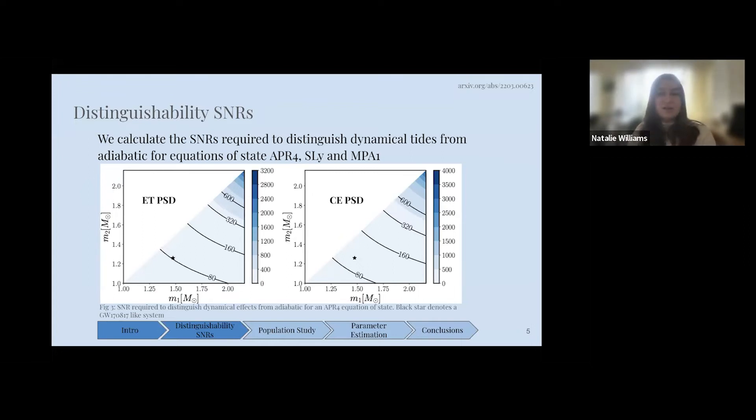Here we show the distinguishability SNRs, the SNRs that we require to be able to theoretically measure these dynamical tides. We show results for the Einstein Telescope and for Cosmic Explorer, as these are the third generation detectors that we consider. The contours show the SNRs that we require to be able to disentangle the adiabatic and dynamical tides. It's a function of the masses - smaller total mass means that the dynamical contribution is increased, so less SNR required. The black star represents a GW170817-like system. For the Einstein telescope, we would require an SNR of about 80, and for Cosmic Explorer, around 100. We calculated what we would have expected GW170817 to have an SNR of, and we're looking at around in the thousands. So we can see that these SNRs are easily achievable in 3G.